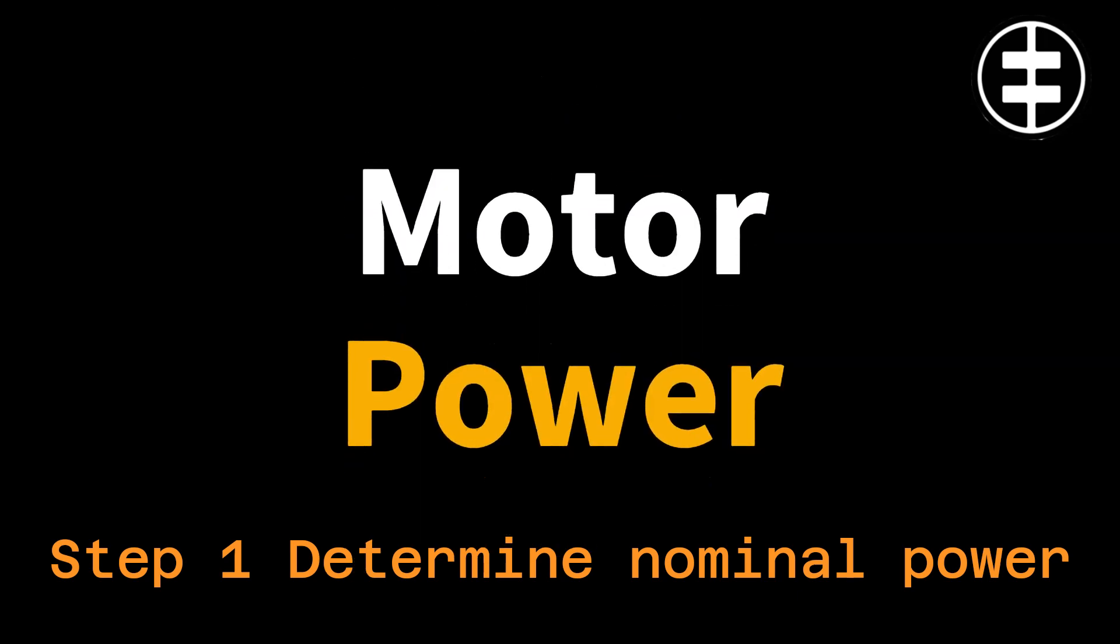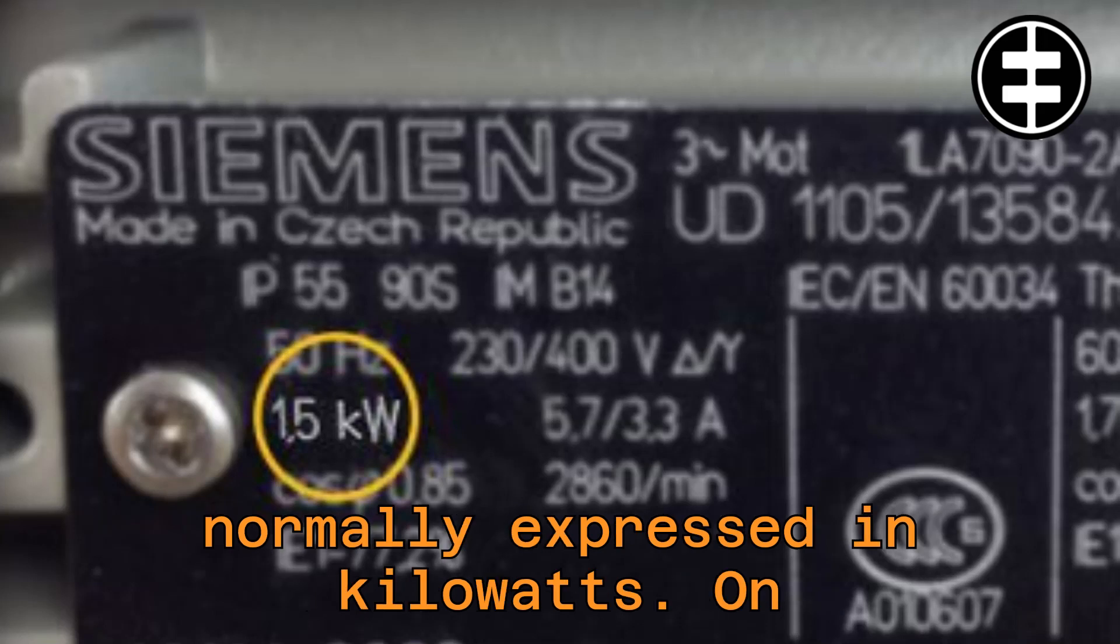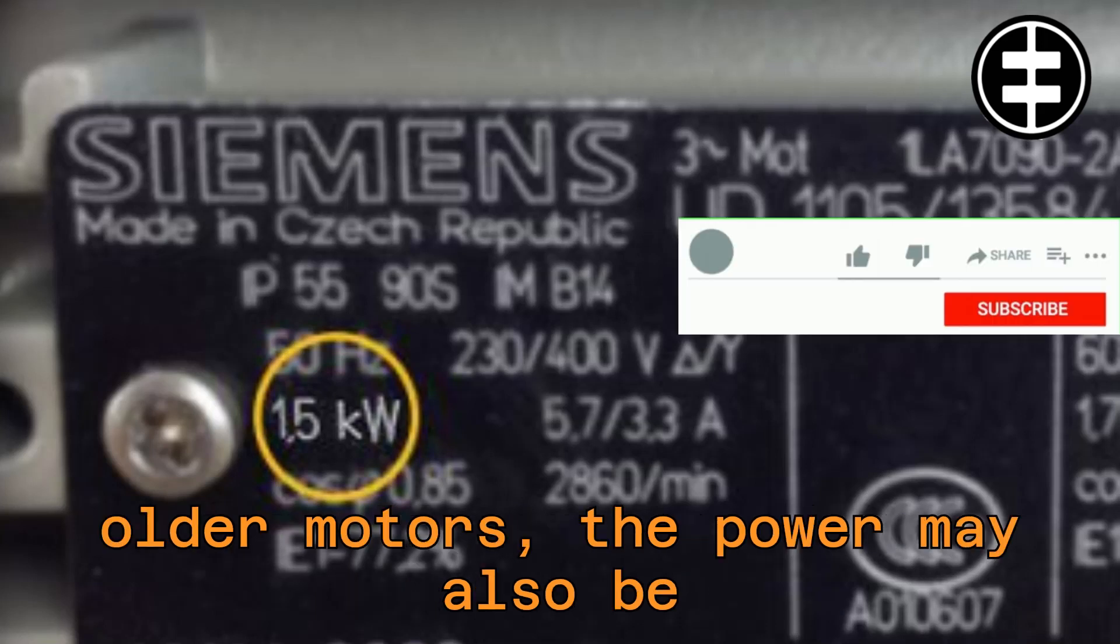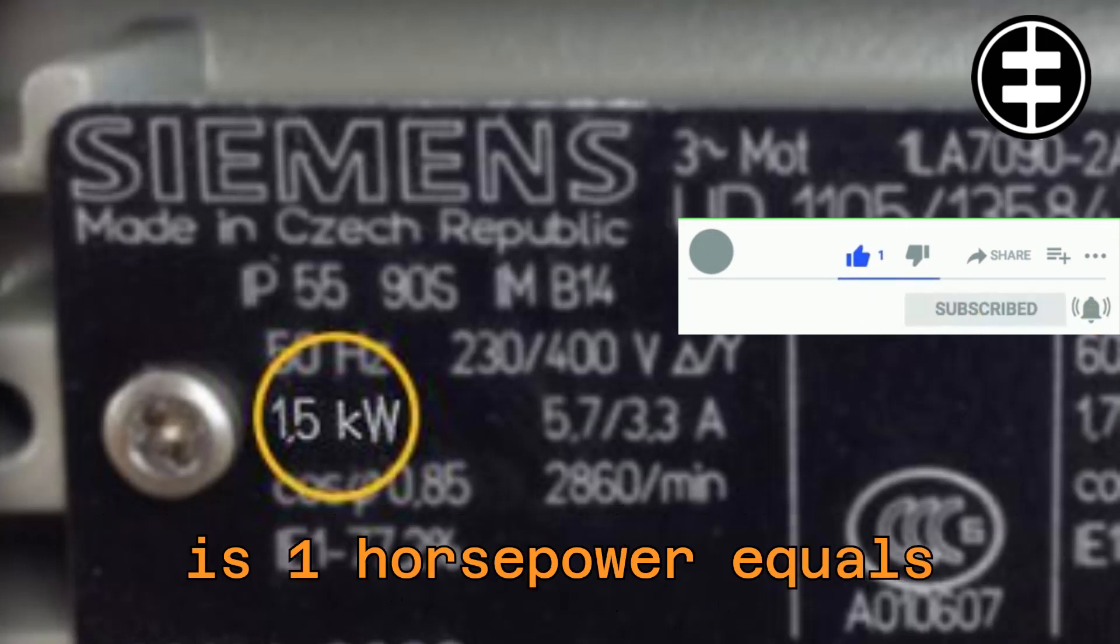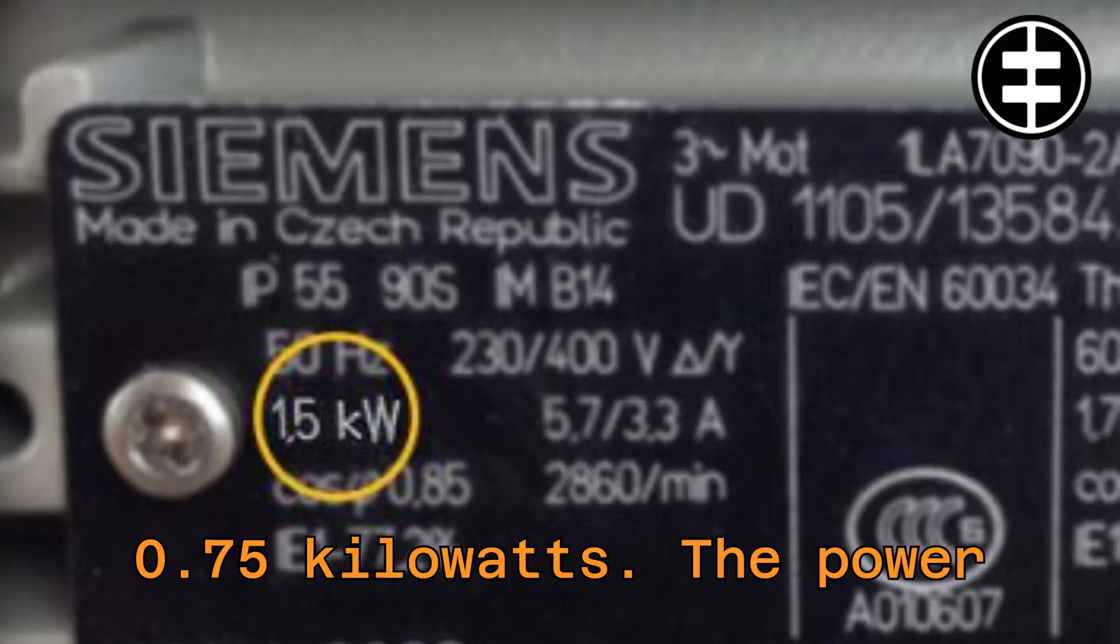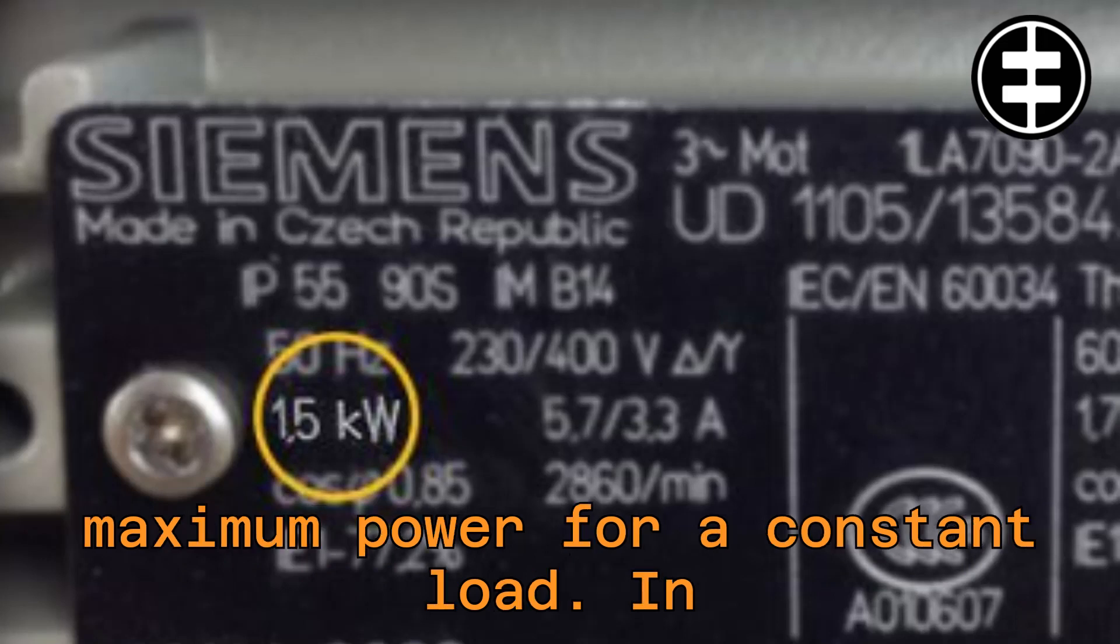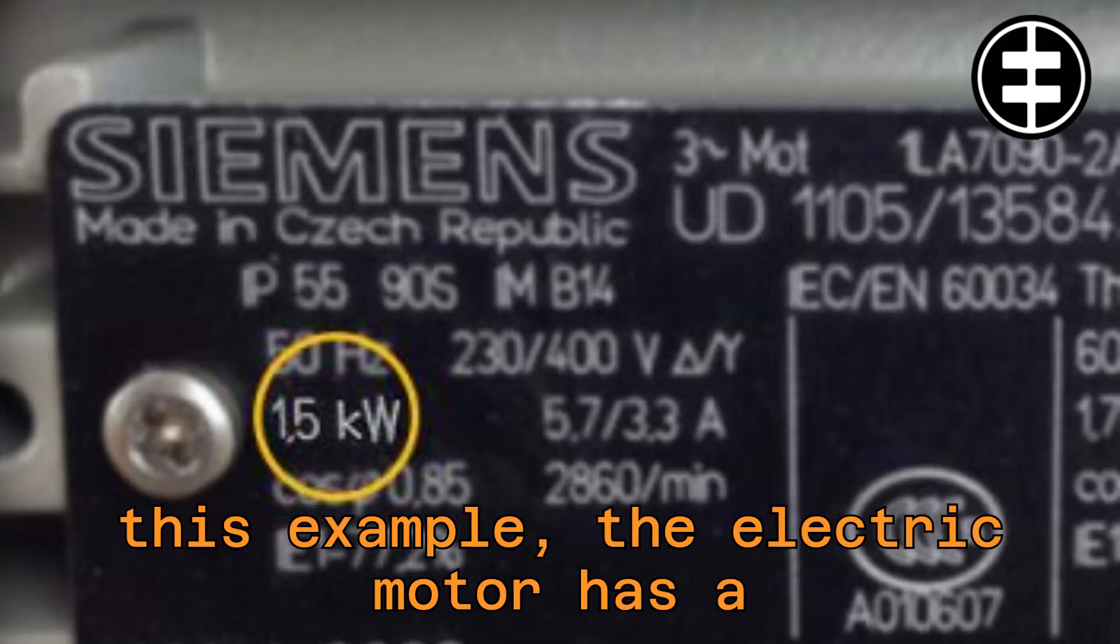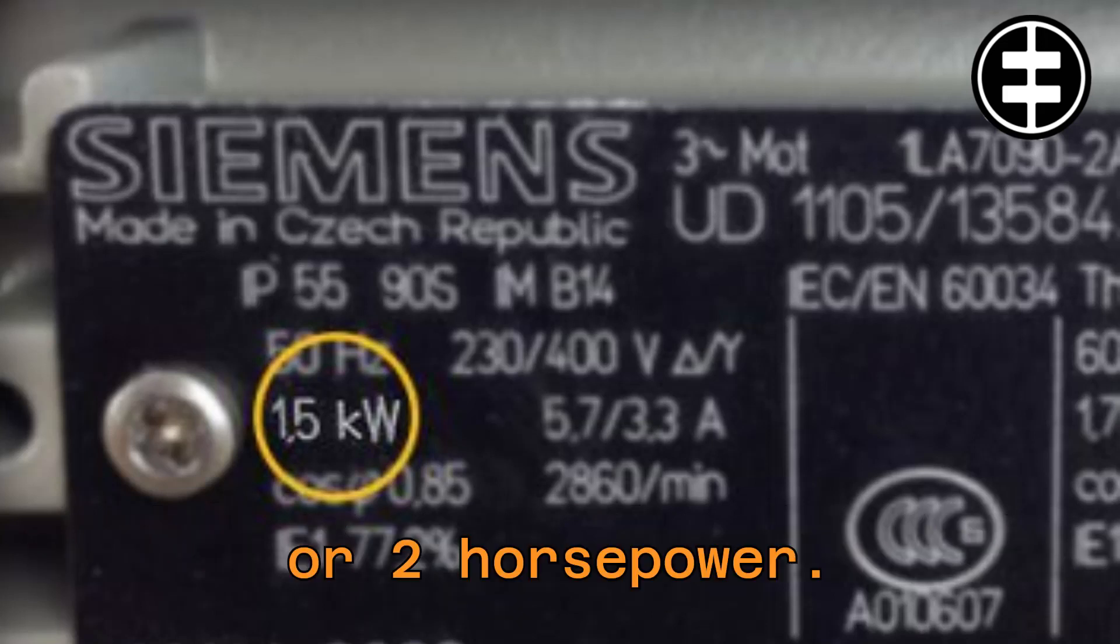Step 1. Determine nominal power. The nominal power of an electric motor is normally expressed in kilowatts. On older motors, the power may also be expressed in horsepower. The conversion is 1 horsepower equals 0.75 kilowatts. The power of an electric motor is based on the maximum power for a constant load. In this example, the electric motor has a nominal power of 1.5 kilowatts, or 2 horsepower.